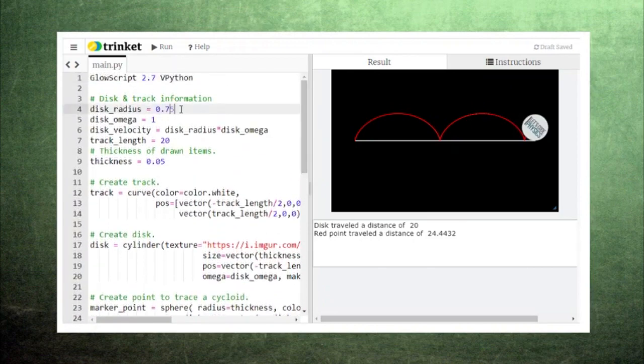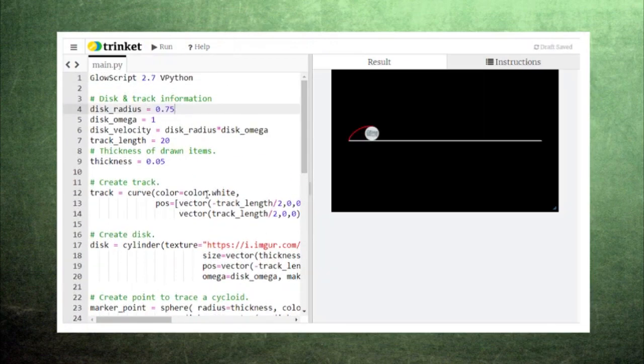If we make the radius of the disc smaller, it needs to make more revolutions to arrive at the end of the track, and the cycloid picks up more cusps.